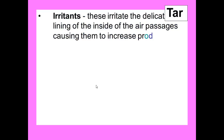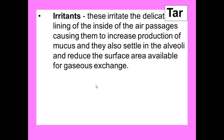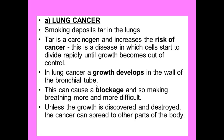Number one: tar contains irritants, which will irritate the lining of your air passages — your bronchi, bronchioles, and trachea — and stimulate the goblet cells to produce more mucus. It will also settle in the alveoli and reduce the surface area for gas exchange. Tar will also potentially lead to cancer, particularly lung cancer — tar is a carcinogen, meaning a chemical which increases the risk of cancer. Cancer is a disease in which cells start to divide rapidly until growth becomes out of control. A growth developing in the wall of the bronchial tube causes a blockage, makes breathing more difficult, and can cause bleeding in the lungs — so sometimes coughing up blood is an early or later sign of lung cancer.